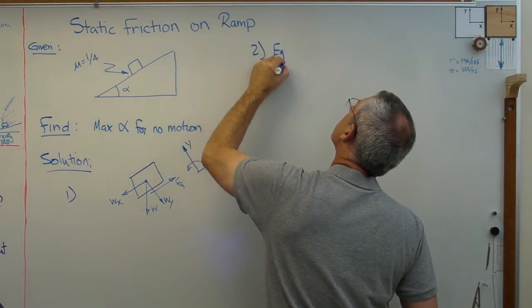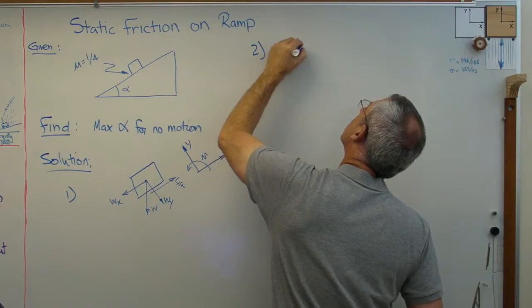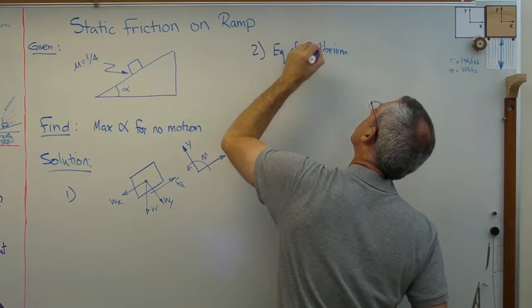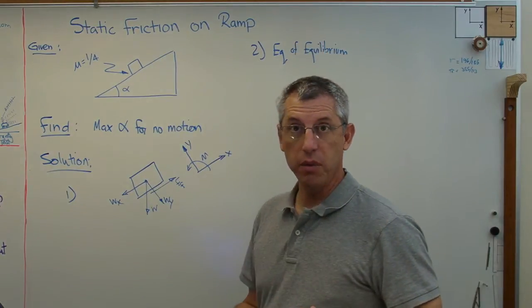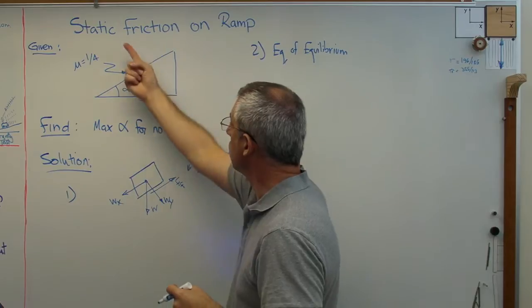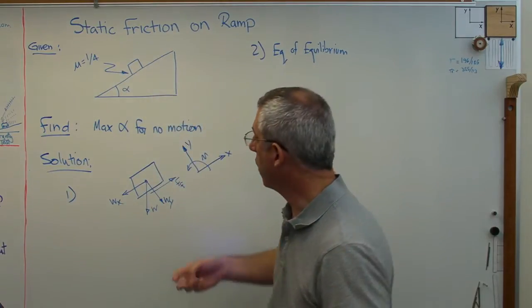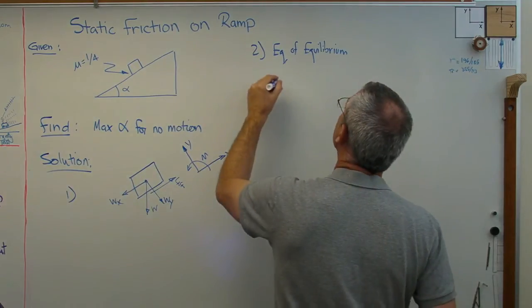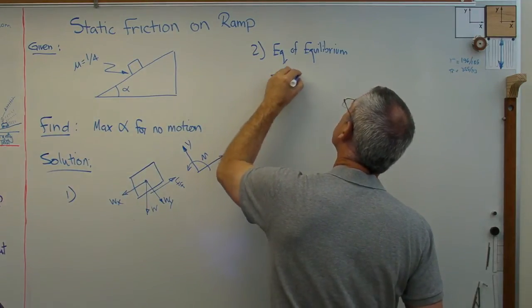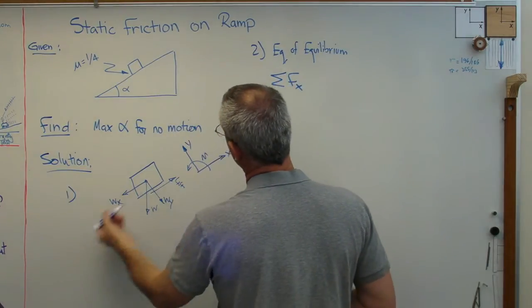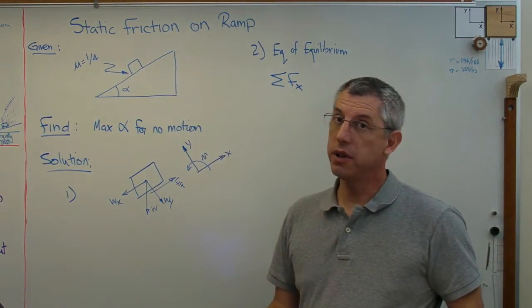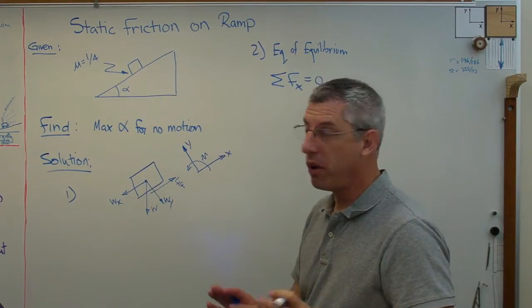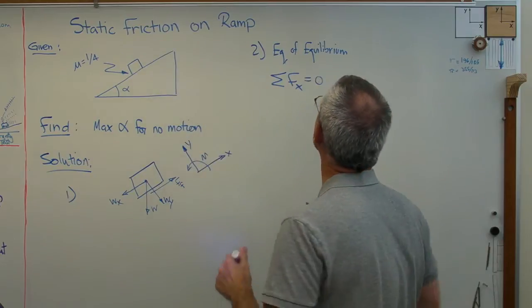Two is going to be equation of equilibrium. Well, equilibrium in what direction? Well, I know the box isn't going to move normal to the ramp. That's the whole point of the ramp, it supports the box. There can't be any motion that way. The motion must be in the X direction. So I'm going to sum the forces in the X direction, which now goes this way, and the sum of those forces has to be zero. If not, there's acceleration. I don't want acceleration. This is a static problem.